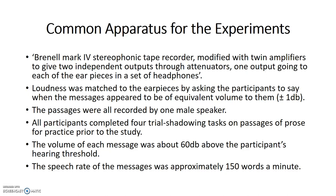He used a Brunel Mark IV stereophonic tape recorder, modified with twin amplifiers to give two independent outputs through attenuators, one output going to each earpiece in a set of headphones. Loudness was matched to each earpiece by asking participants to say when messages appeared to be of equivalent volume, within one decibel on either side. All passages were recorded by one male speaker. Participants completed four trial shadowing tasks for practice. The volume was about 60 decibels above hearing threshold, and the speech rate was approximately 150 words per minute.